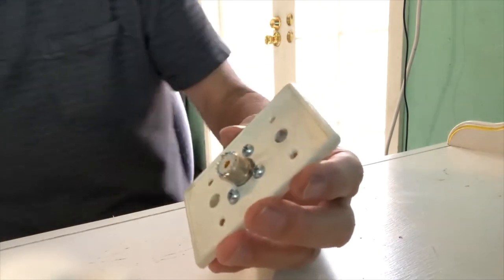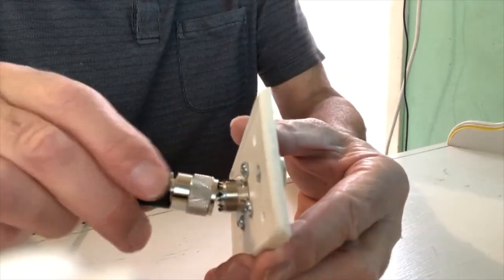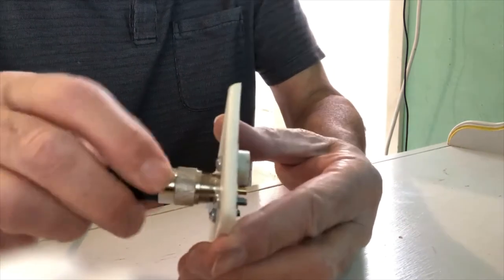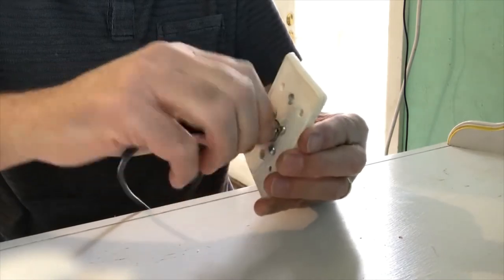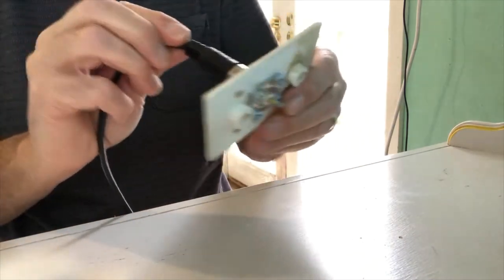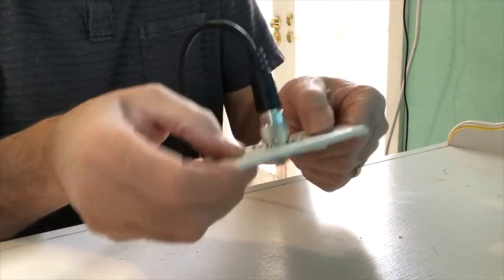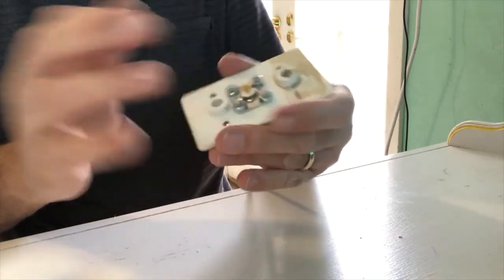And the bolt heads stick out a little, so let's make sure our coax can fit on here all the way. Perfect. All right, so we're going to run our antenna wires through these holes and solder them to the connection here.